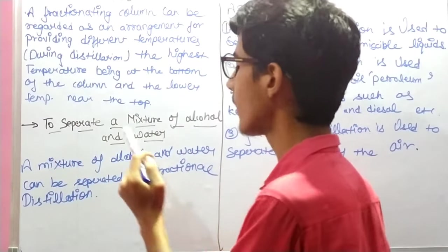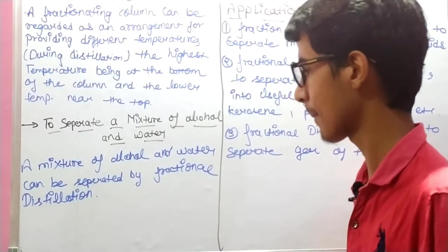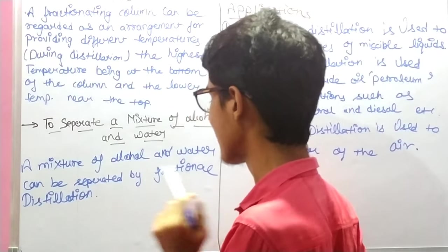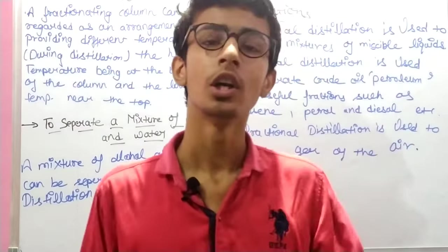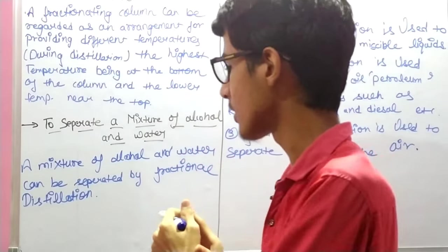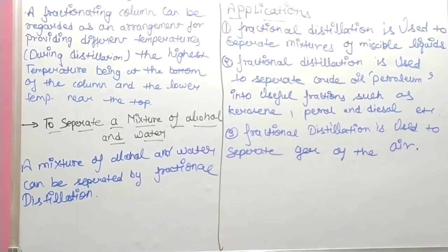Now, how do we separate a mixture of alcohol and water? This mixture can be separated by fractional distillation. We heat the mixture in a distillation flask with a fractionating column attached. When the mixture starts to heat, alcohol and water will turn into vapors and begin to rise.